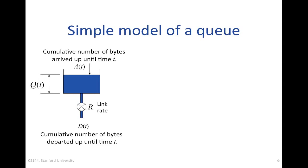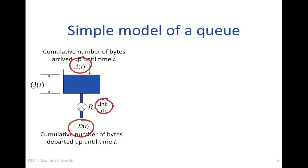We can think of a queue as being like a bucket full of water. A(t) is the cumulative number of bytes that have arrived up until time t. D(t) is the cumulative number of bytes that have departed up until time t, and in this example they depart at a fixed link rate r. At any one time there may be some bytes that have arrived but haven't yet departed — they're the ones sitting in the bucket — and the occupancy of that bucket is Q(t).